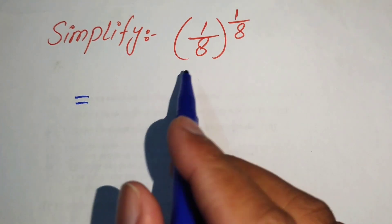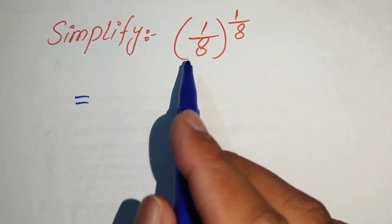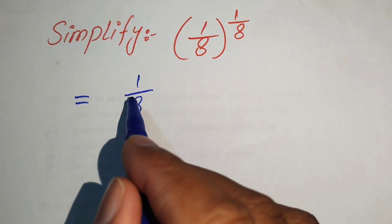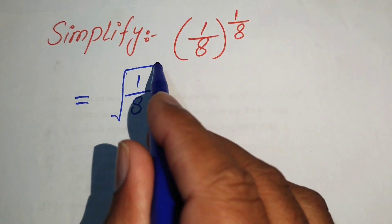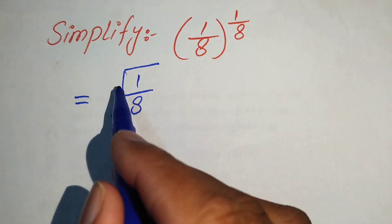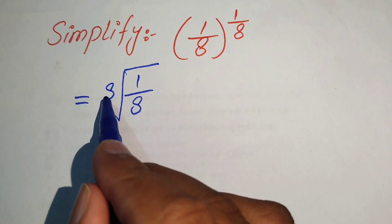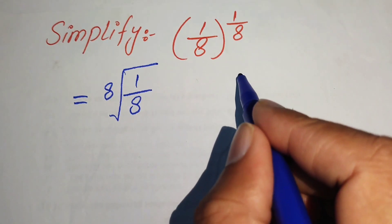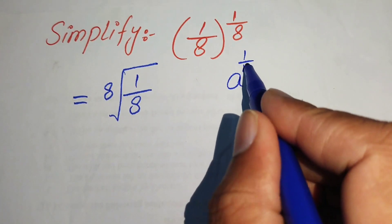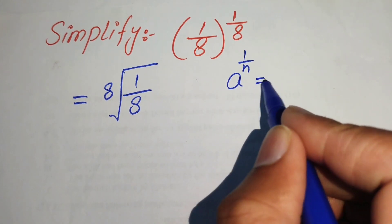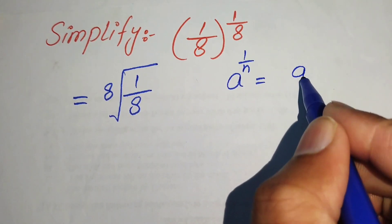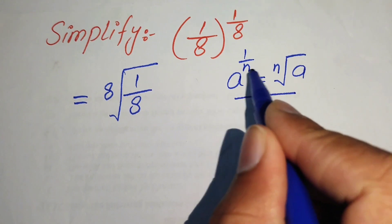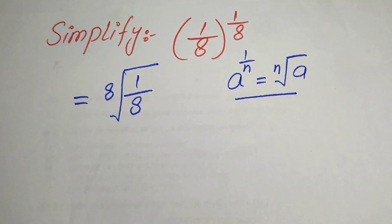First we write this into the radical form. We have 1 over 8 to the power of 1 over 8, so the 1 over 8 exponent means the 8th root. We write it in radical form because if you have a to the power 1 over n, it is written as the nth root of a. We convert this exponential form into the radical form.